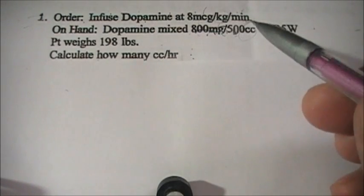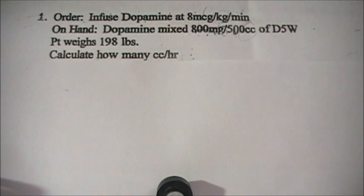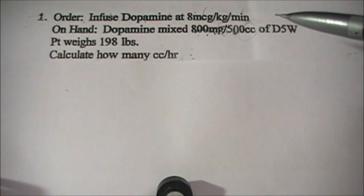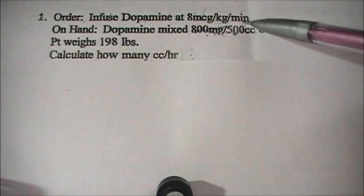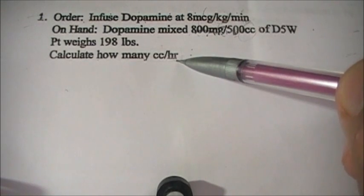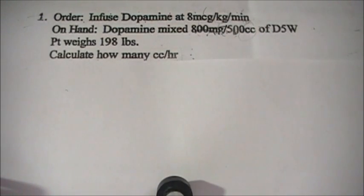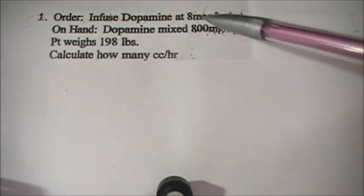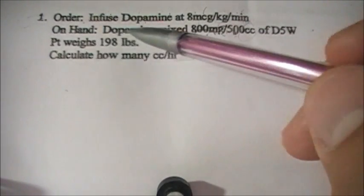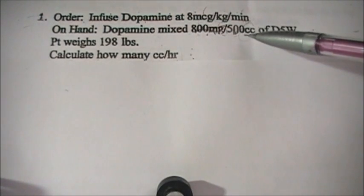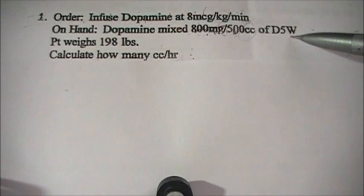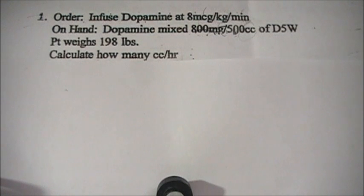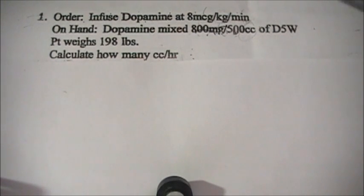Hi guys, today we're going to answer one of the dreaded problems in pharmacology: calculating medication with micrograms per kilogram per minute when you're looking for cc's per hour or mL's per hour. Let's read the problem: order to infuse dopamine at 8 mcg/kg/min. On hand is dopamine mix 800 milligrams per 500 mL of D5W, and the patient's weight is 198 pounds. Calculate how many cc's per hour.